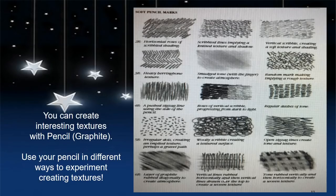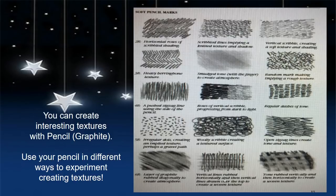You can create interesting textures with pencil, also called graphite. You can use your pencil in different ways to experiment while creating textures. You can change the direction that you use your pencil. You can draw shorter and longer or overlapping marks or lines. You can change the pressure. These are several interesting textured examples that you can experiment with. You may or may not use them in the art we create today, but it may be an opportunity to go back to these textures, experiment and practice, and use them in a future work of art.